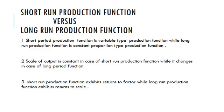There are three important differences between short run and long run production functions. First, short run production function is variable proportion type, while long run production function is constant proportion type. Second, scale of output is constant in the case of short run production function, while it changes in long run production function. Third, short run production function exhibits returns to factor, while long run production function exhibits returns to scale.